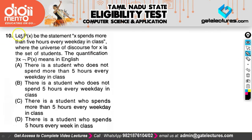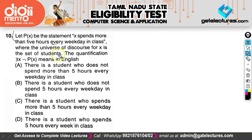This question says let P(X) be the statement: X spends more than 5 hours every weekday in class, where the universe of discourse for X is the set of students. The quantification '∃x ¬P(x)' — let's derive what this is trying to say in English. P(X) is the statement that X spends more than 5 hours every weekday in class.